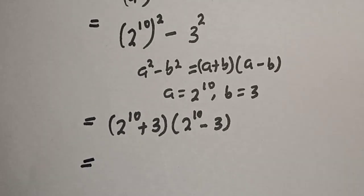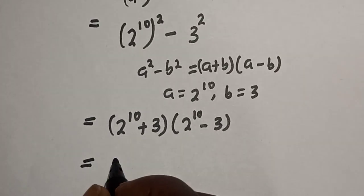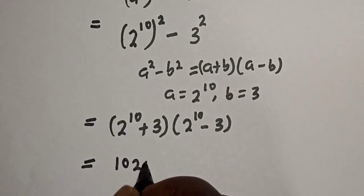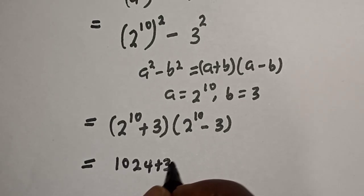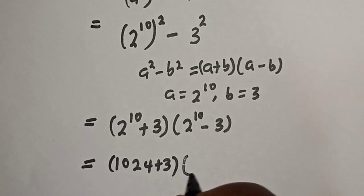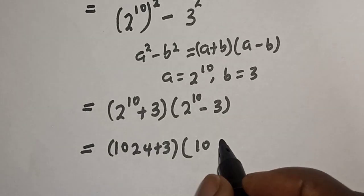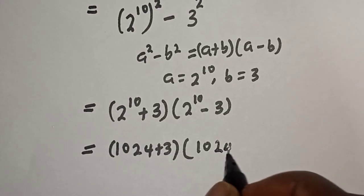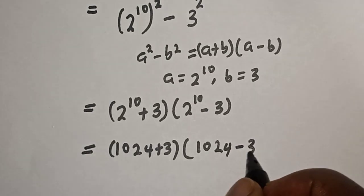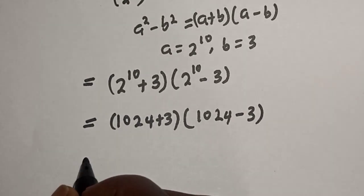This is equal to 2 raised to power 10, which is 1024, plus 3, multiplied by 1024 minus 3.